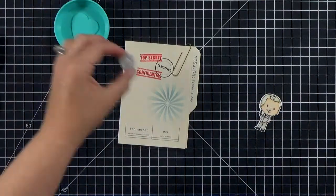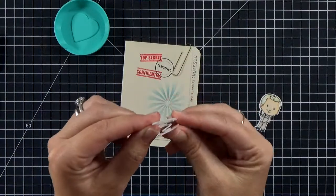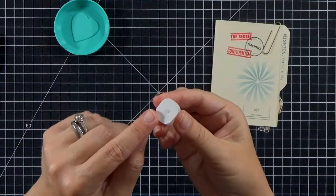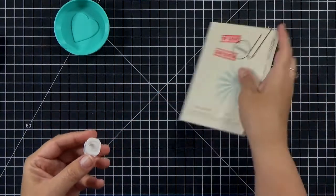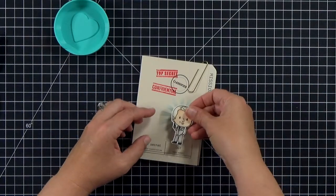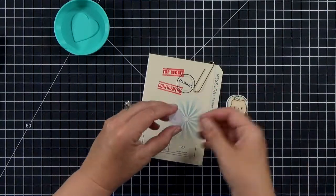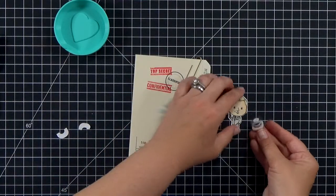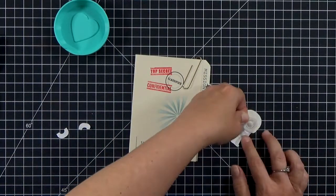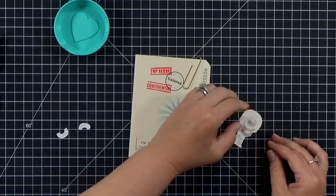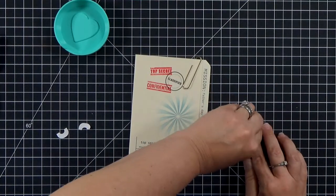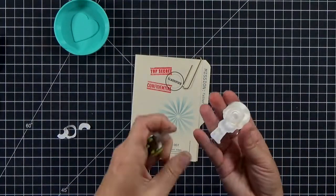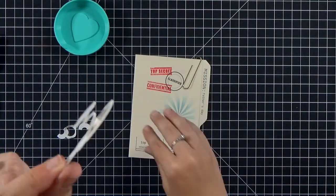And then I want to attach my spy with an action wobbler. And if you haven't seen these before, they're really cool. They're little springs. They compress down flat, but then they pop up when it's out of the envelope and you can kind of wiggle the character back and forth. And I find it's easier to attach the spring to my character first, and then I can peel off the release paper for the other side and I'll use my tweezers.